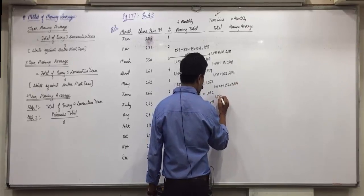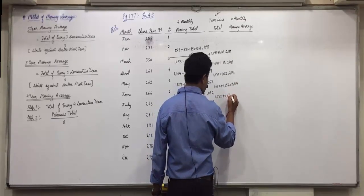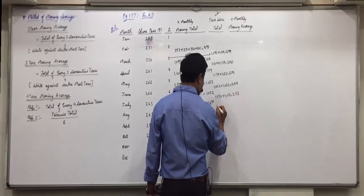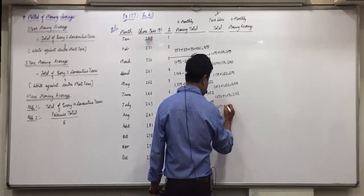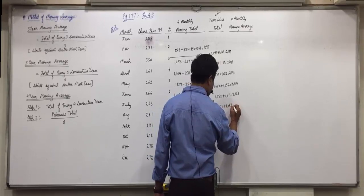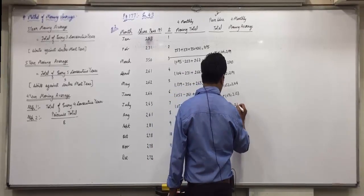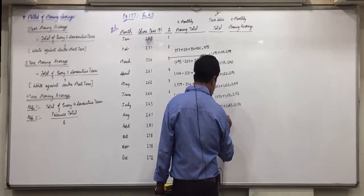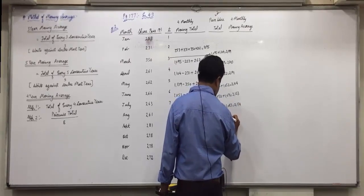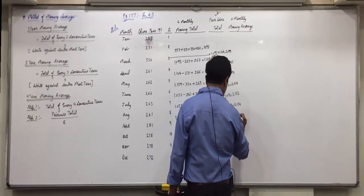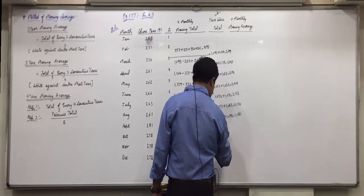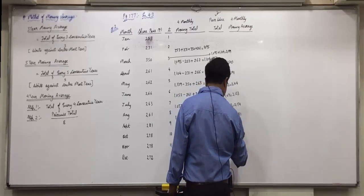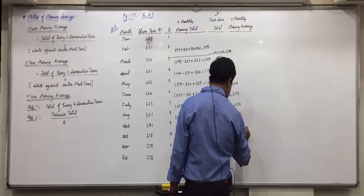Then 1052 plus 1071 equals 2123. Then 1071 plus 1083 equals 2154. Then 1083 plus 1098 equals 2181. Then 1098 plus 1109 equals 2207. Are you all able to understand this?